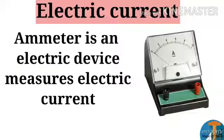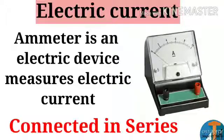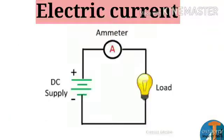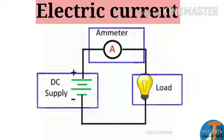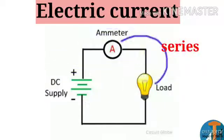An ammeter is an electric device which measures the amount of electric current in the circuit, and remember, ammeter is always connected in series, that means adjacent to the bulb. If we consider a simple electric circuit which consists of bulb, ammeter, and a battery, the ammeter is connected in series.